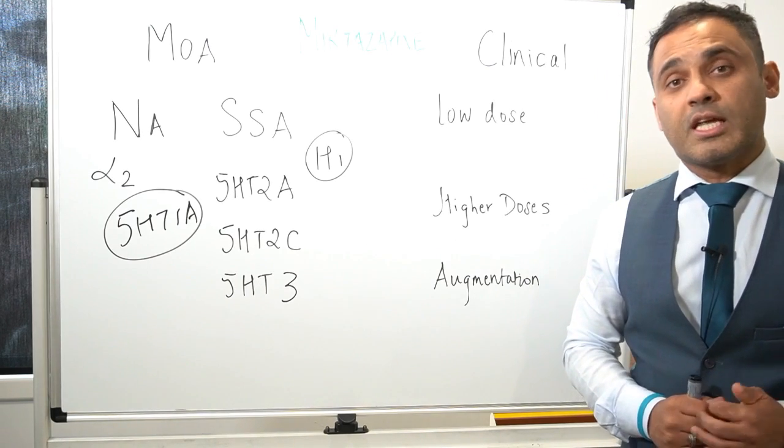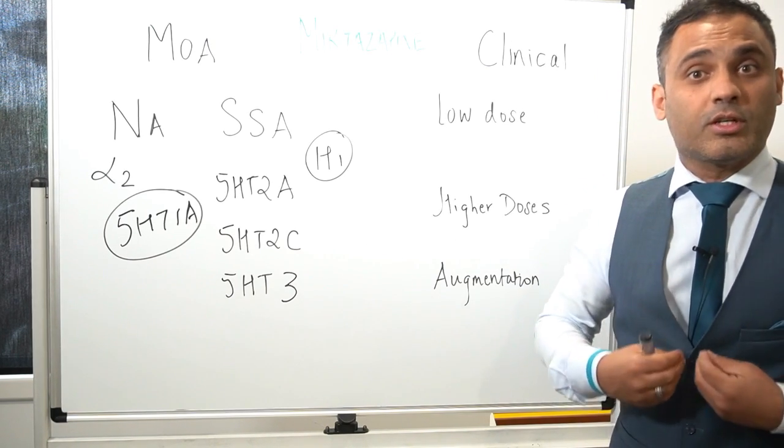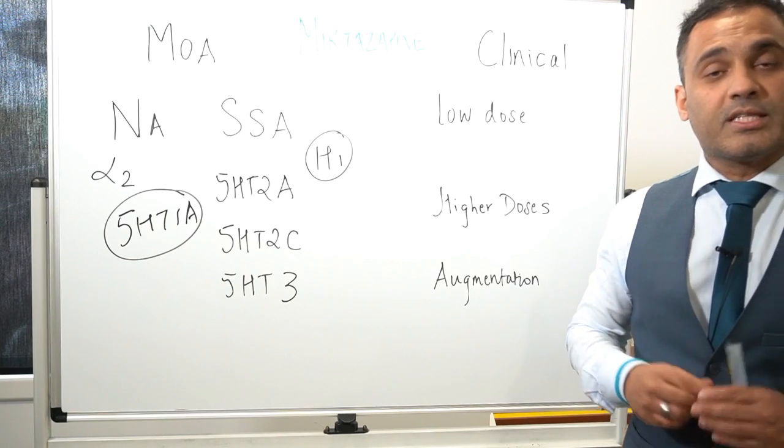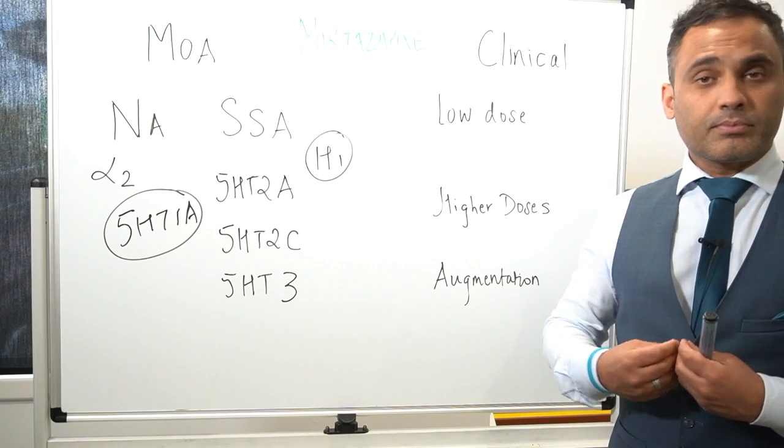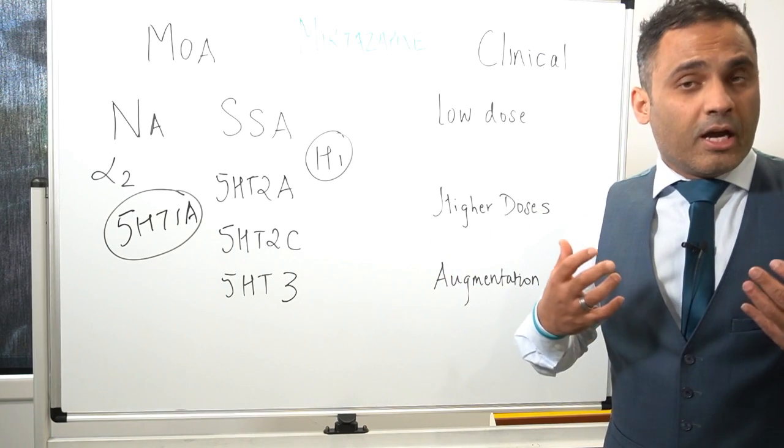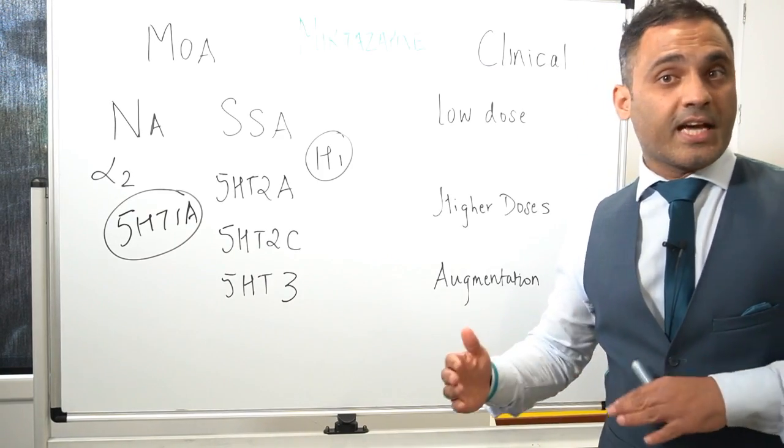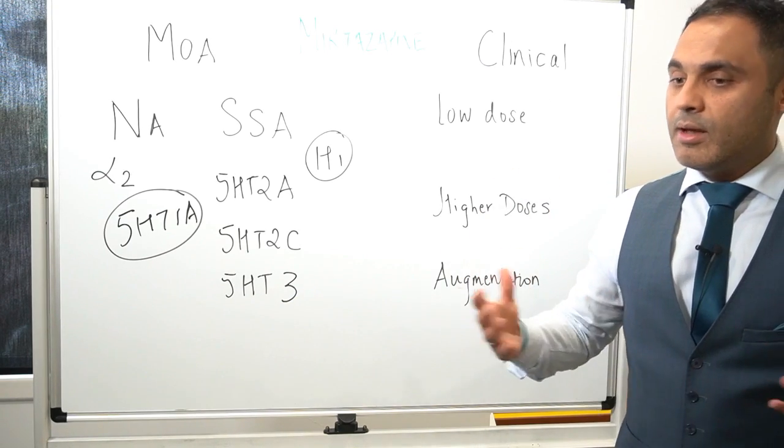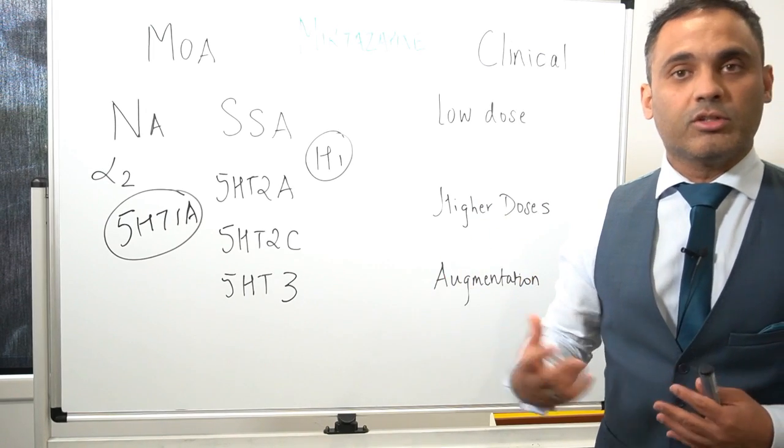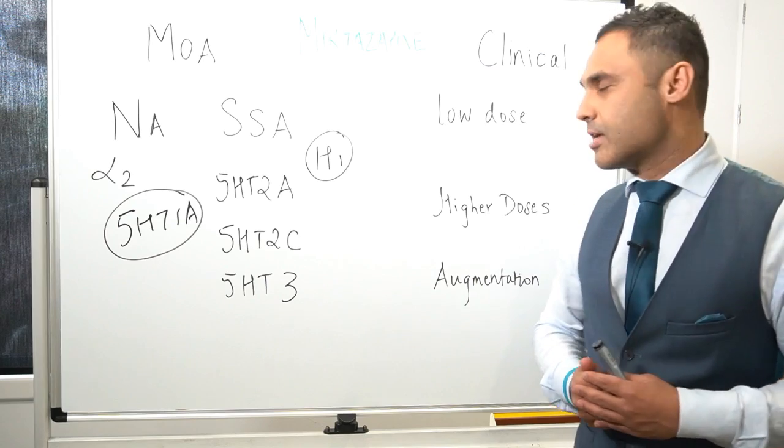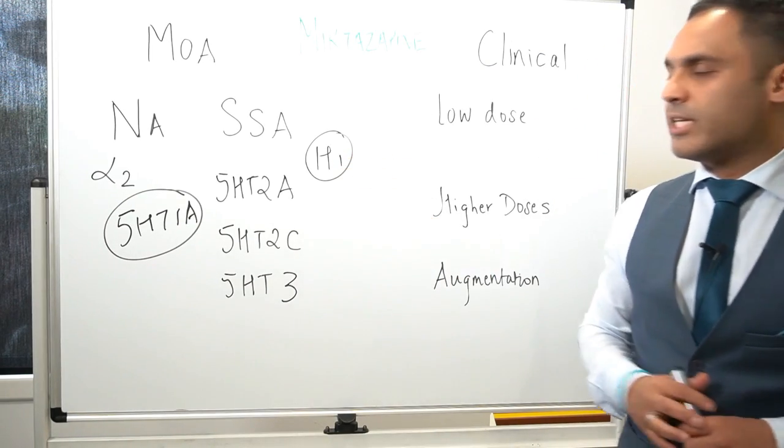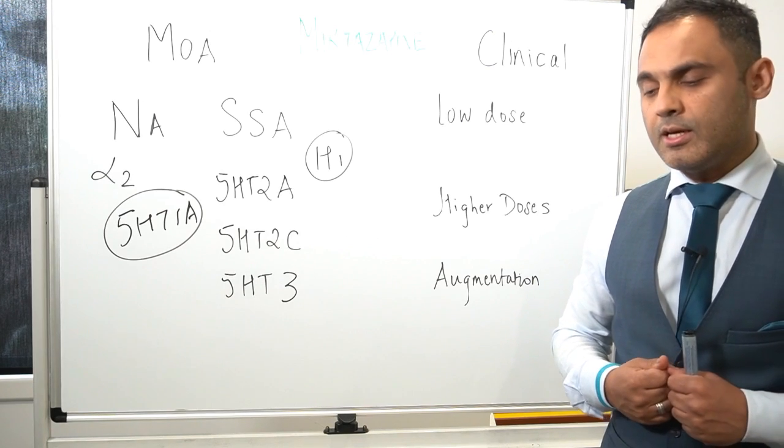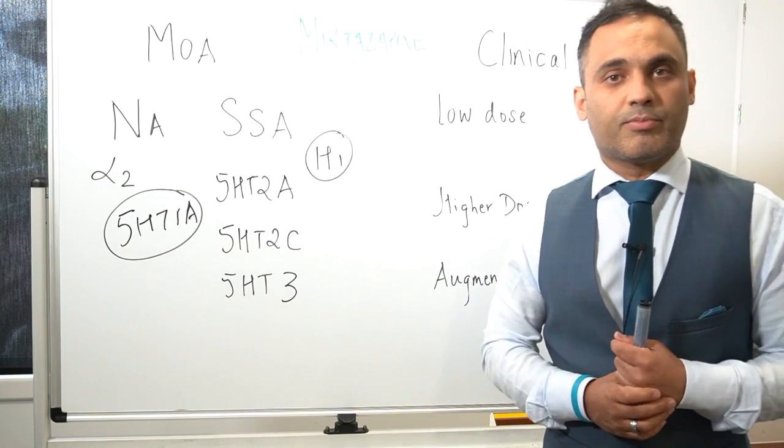I also tend to use it in the consultation liaison setting for patients, for example with cancer or have significant nausea. It can really help with anxiety. And interestingly, the 5-HT3 receptor tends to also help with the nausea in cancer patients. As we know, anti-nausea medications such as ondansetron is a 5-HT3 antagonist. Mirtazapine provides inherent 5-HT3 antagonism, so it can be used as an anti-nausea agent in patients that might be extremely anxious or might have medical issues associated, such as cancer patients.